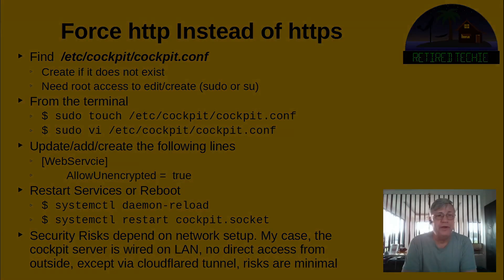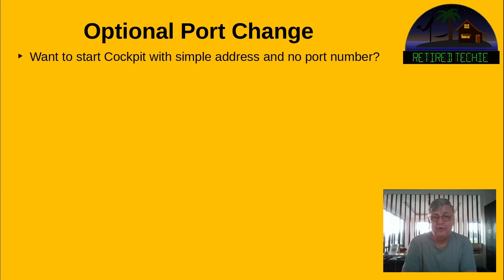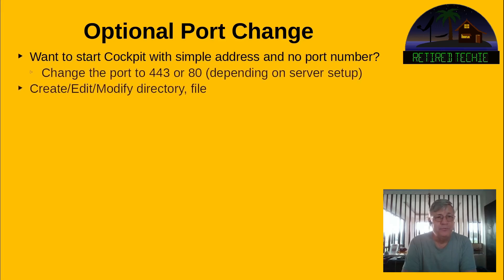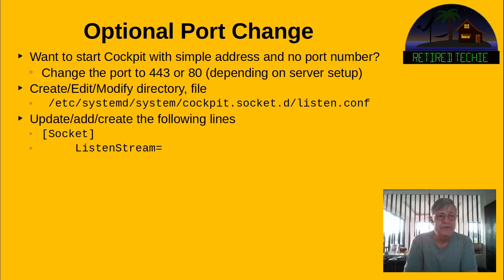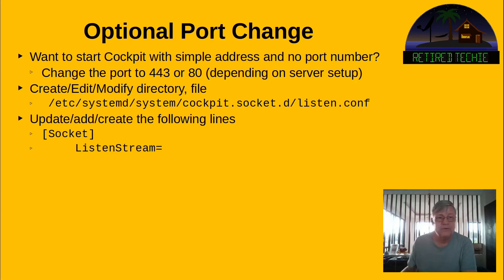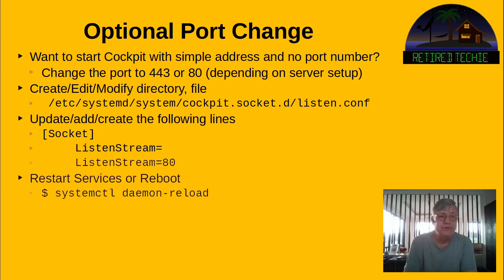If you want to do a port change — for example, if you want to use the common ports 443 or 80 so you just need to type the address without a port — you can do that too. You can create or modify the /etc/systemd/system/cockpit.socket.d/listen.conf file. If you've never played with it before, the cockpit.socket.d directory probably doesn't exist and the listen.conf probably doesn't exist either. You'll need to be root to create these, and technically since it's a .d directory you could call the file anything.conf — I tried override.conf and that worked as well as listen.conf. You want to add [Socket] in square brackets if it's not already there, then do ListenStream= with nothing to clear the 9090 port, then do ListenStream=80 or 443 depending on what you're using. Then restart services or reboot to get it to take effect.